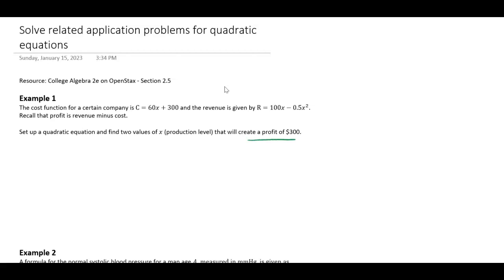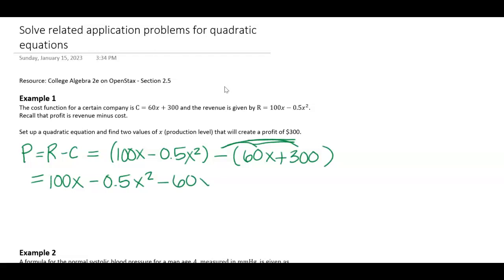Let's go ahead and make our profit equation first. We know that that's revenue minus cost, so that's going to be 100x - 0.5x² minus my cost equation.